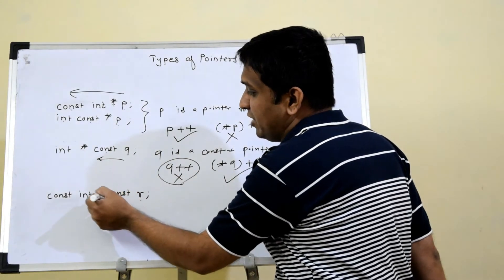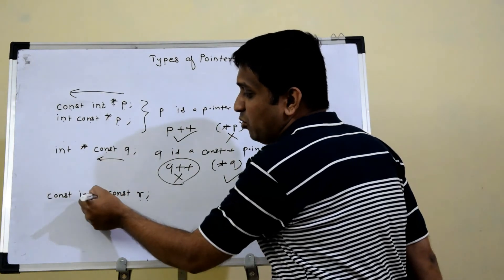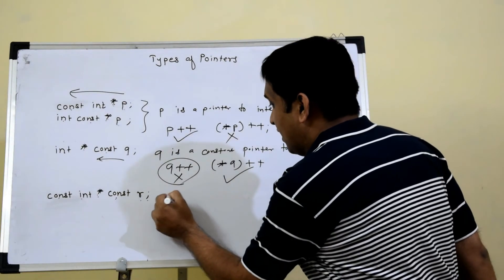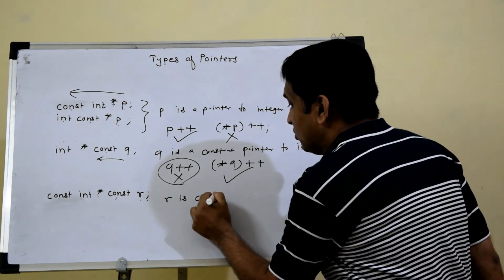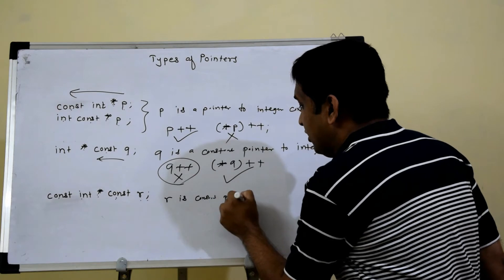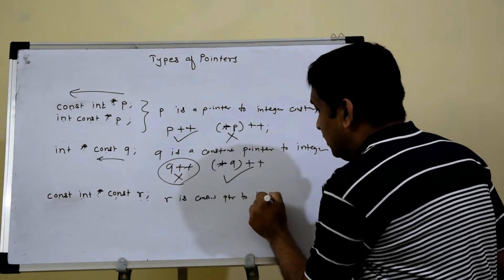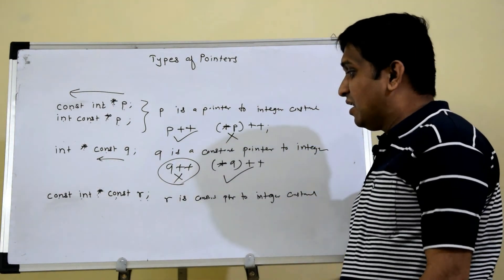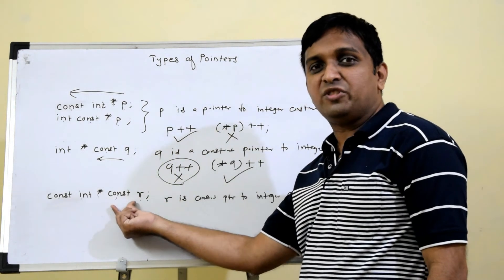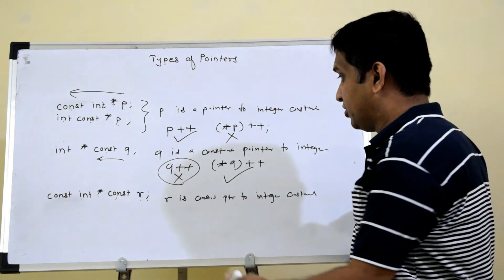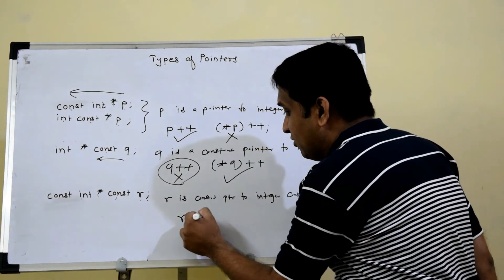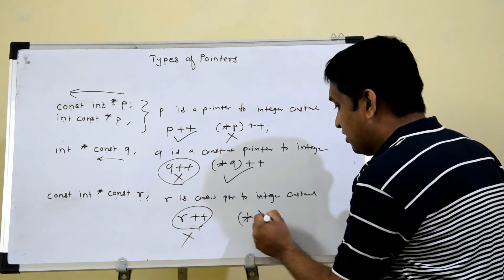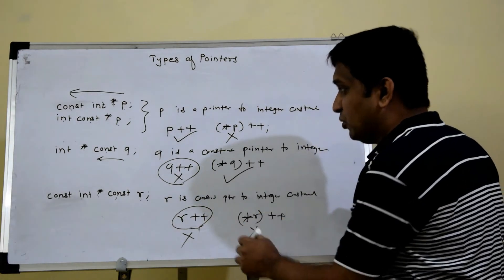The last declaration, reading from right to left: r is a constant pointer to integer constant. That means both are constant — the pointer is also constant and the variable to which it is pointing is also constant. So you cannot change the value of r, and this will throw an error, and you cannot change the value at r either, so this will also throw an error.